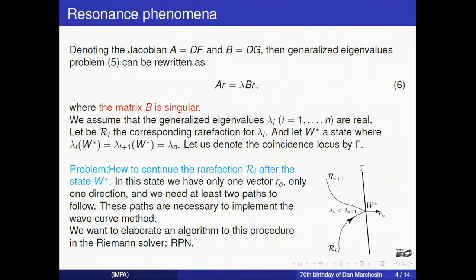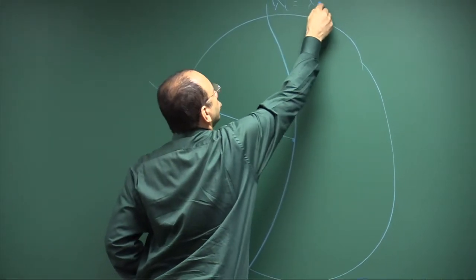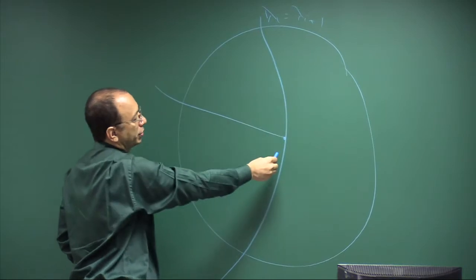We have the following problem: we need to find solution in the behavior when two eigenvalues coincide. The problem is a practical problem. How to continue the rarefaction after the state W*? In this state, we have only one eigenvector. To continue, we need at least two paths. These paths are necessary when we try to implement the wave curve method. So we arrive here and you need to close the surface when the eigenvalue coincides.